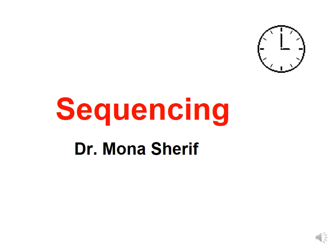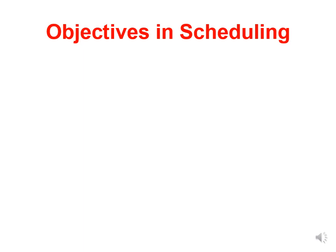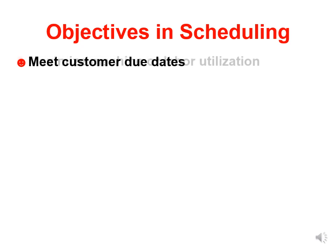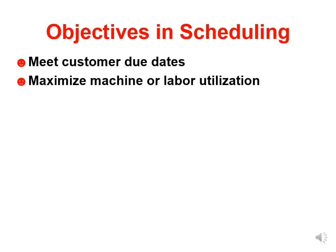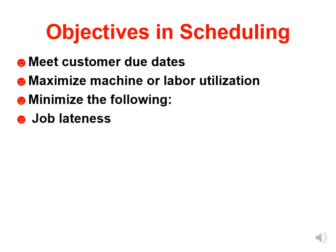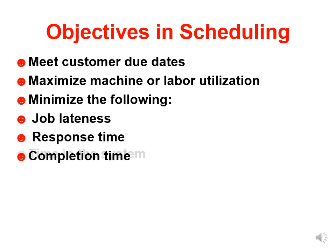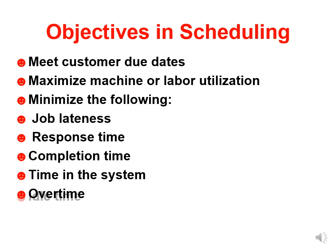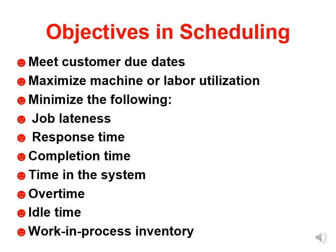Sequencing objectives in scheduling include: meeting customer due dates, maximizing machine or labor utilization, and minimizing the following — job lateness, response time, completion time or time in the system, overtime, idle time, and work-in-process inventory.